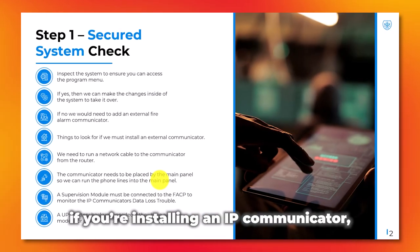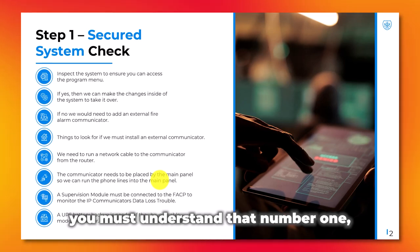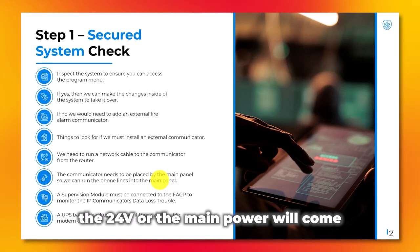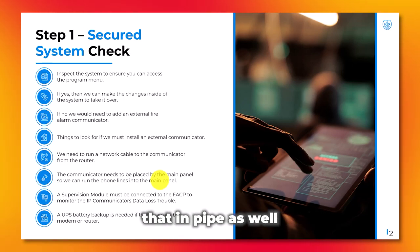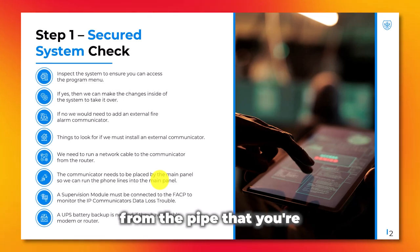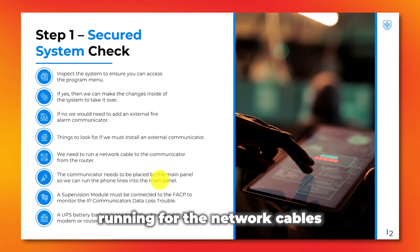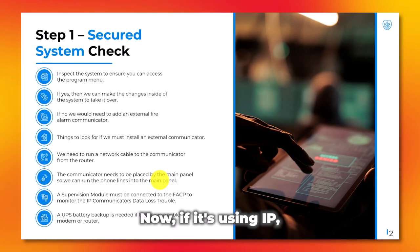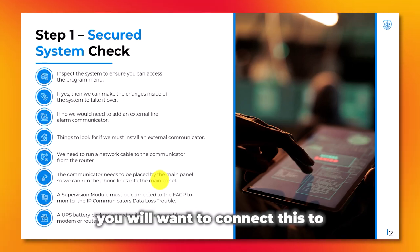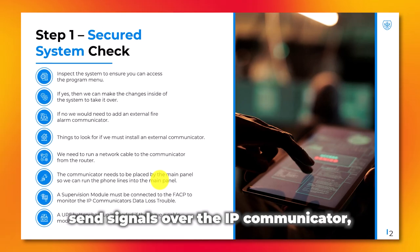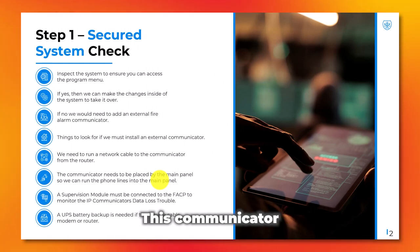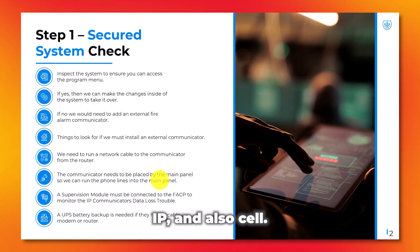Now if you install an IP communicator, understand that the 24 volts or main power will come from the fire alarm panel, and that has to be encased in pipe — in a separate pipe from the one you're running for network cables or phone line cables. If it's using IP, you will want to connect this to the customer's router or switch so it can communicate via IP, send signals over the IP communicator and also over the cell communicator. This communicator has four types of communication: phone line one, phone line two, IP, and cell.